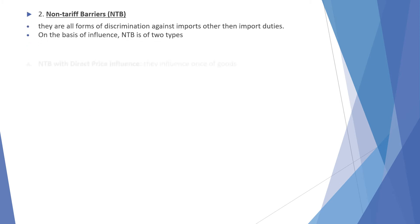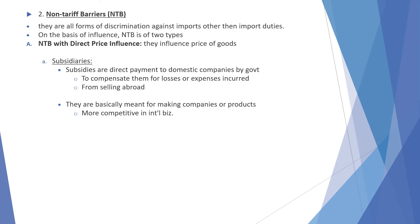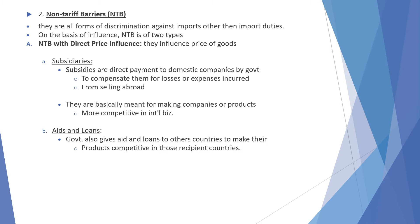Non-tariff barriers are all forms of discrimination against imports other than import duties. There are two types: non-tariff barriers with direct price influence and non-tariff barriers with quality control effect. Direct price influence barriers affect the price of goods — for example, subsidies, which are direct payments to domestic companies by the government to compensate for losses and expenses incurred from selling abroad, making companies or products more competitive in international business.